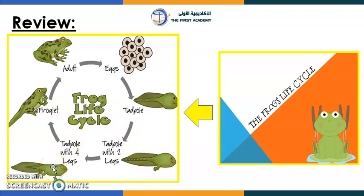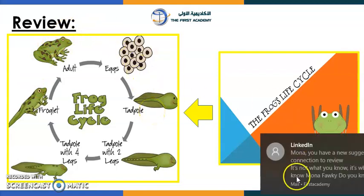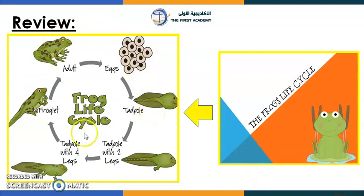Next is the tadpole with four legs — it has four legs, excellent! Then, what can you see? A froglet! And finally, an adult frog. These are the stages — this is the life cycle of the frog.